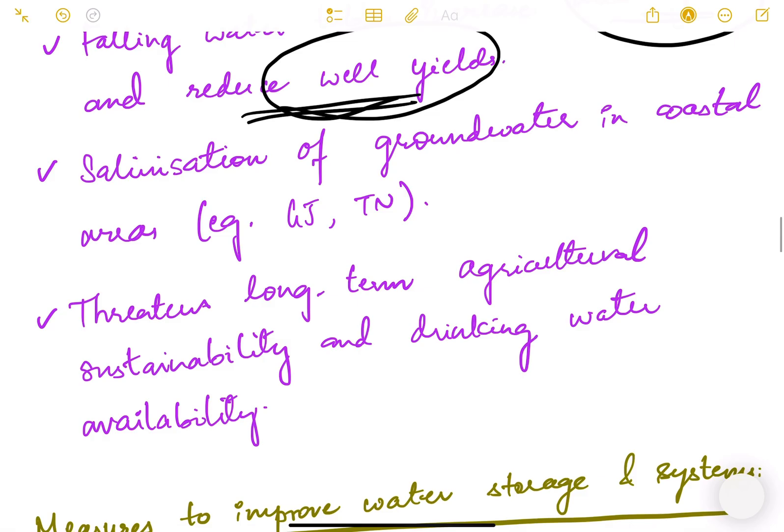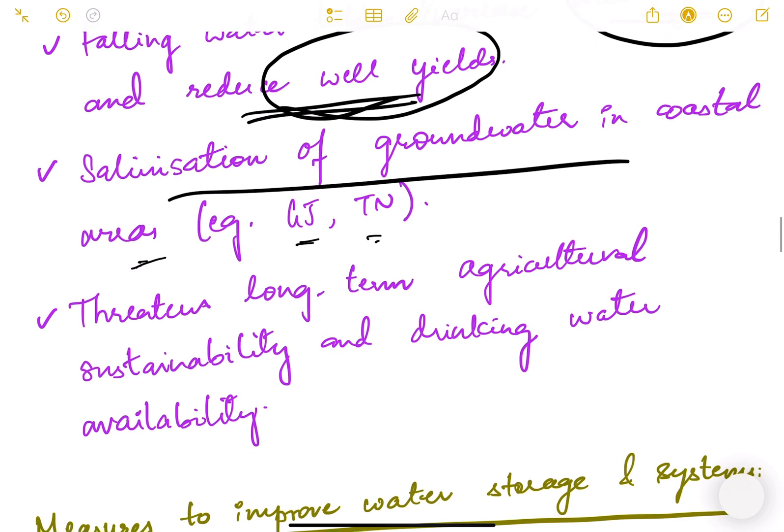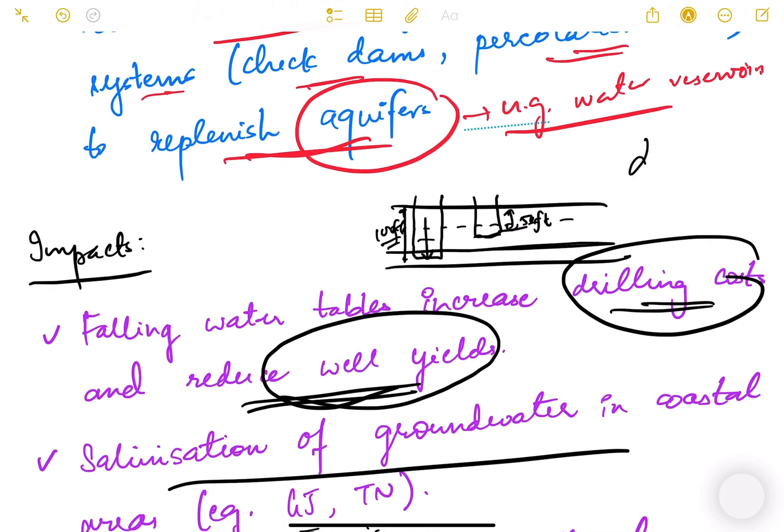Salinization of groundwater in coastal areas—examples are Gujarat and Tamil Nadu. This is another problem. As you go deeper, the salinity will also increase in the ground, especially in coastal areas.